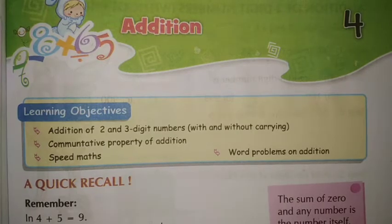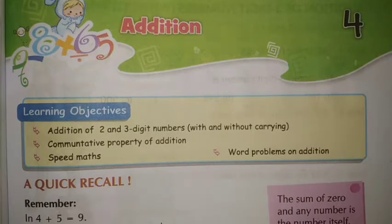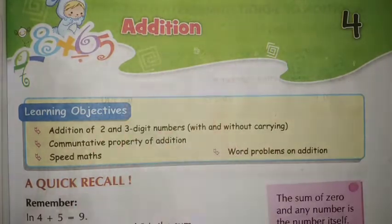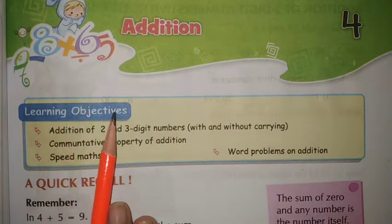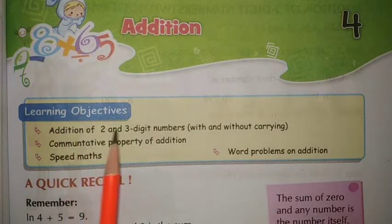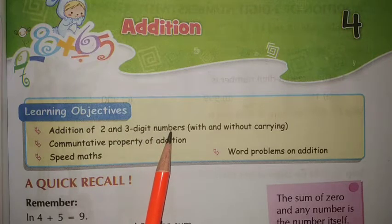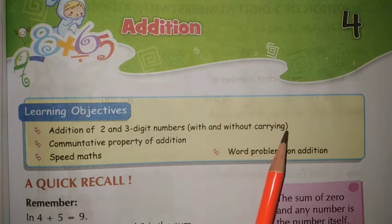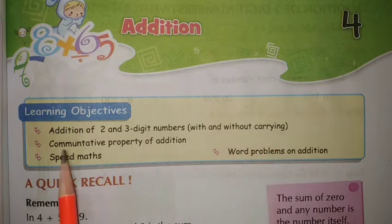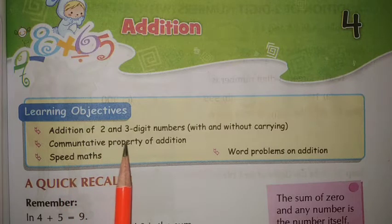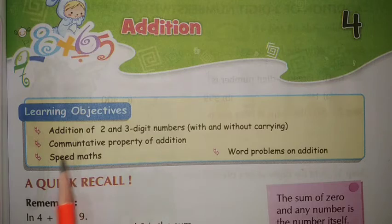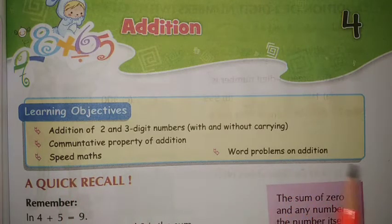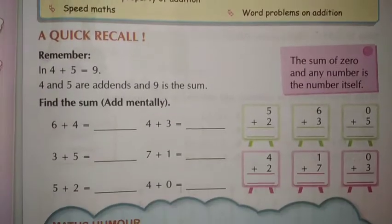Vande Mataram, my dear students. Today's subject is Mathematics and today we will learn Chapter 4: Addition. The learning objectives are: addition of 2 and 3 digit numbers with and without carrying, the commutative property of addition, speed maths, and word problems on addition. Let's see this.